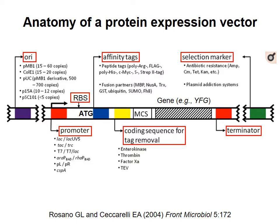The plasmid should have a promoter that the bacterial RNA polymerase can recognize. Ideally, this promoter would contain regulatory sequences that allow transcription of the gene to be turned on at a specific point in the growth of the bacterial culture. Often promoters are used that are based on the lac promoter, which is turned on when lactose, or a lactose analog, is added to the culture.